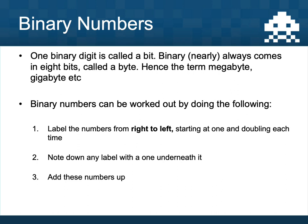To convert binary to denary we follow three straightforward steps. First, label the positions from right to left, starting at one and doubling each time: 1, 2, 4, 8, 16, and so on. Second, note down any numbers whose position has a one underneath it — a one means that number is switched on. Third, add up all of the numbers that are switched on to get your answer.